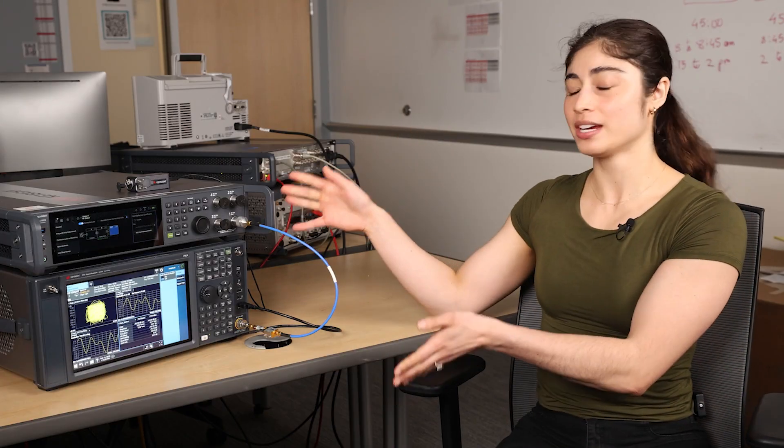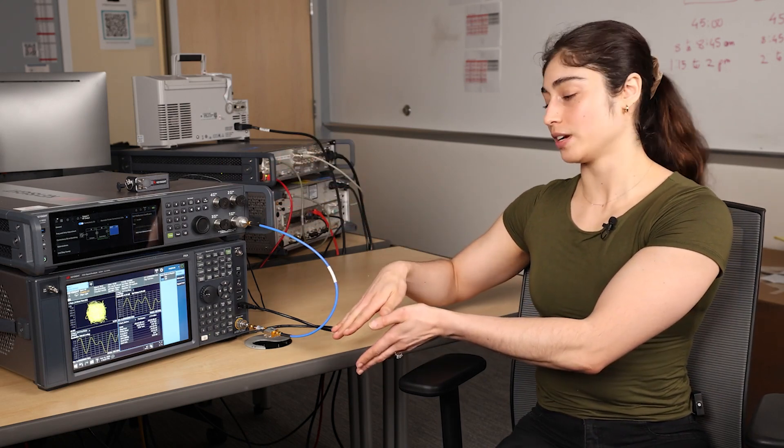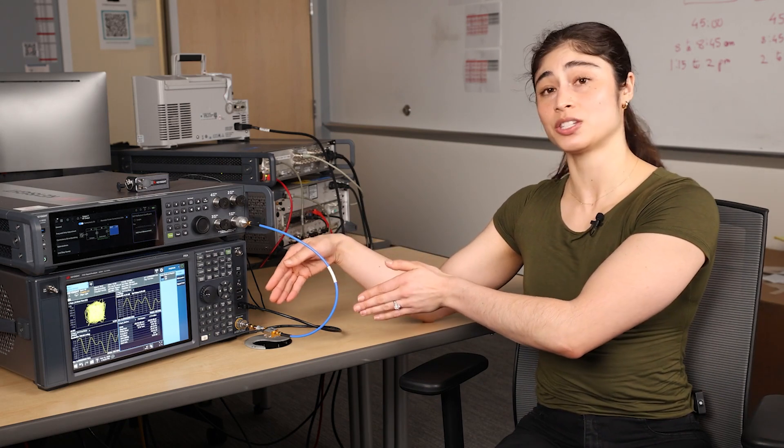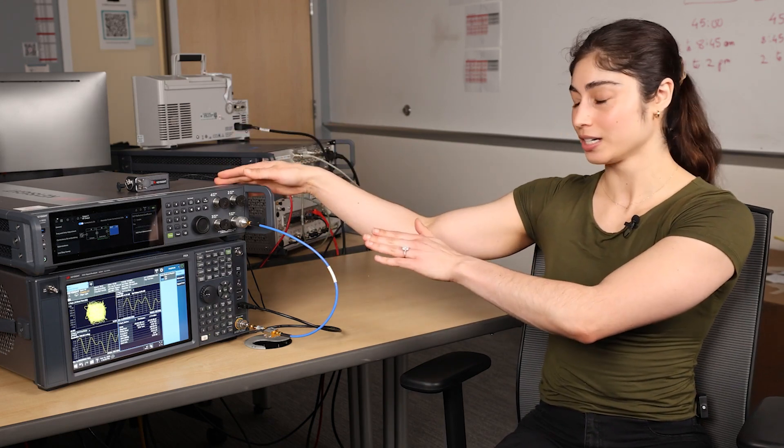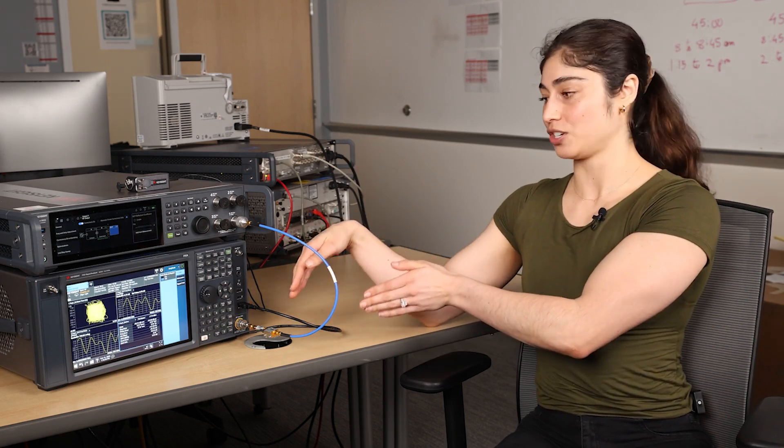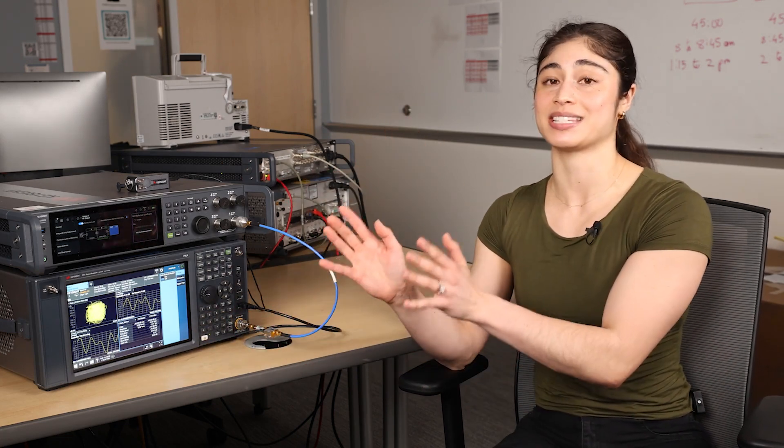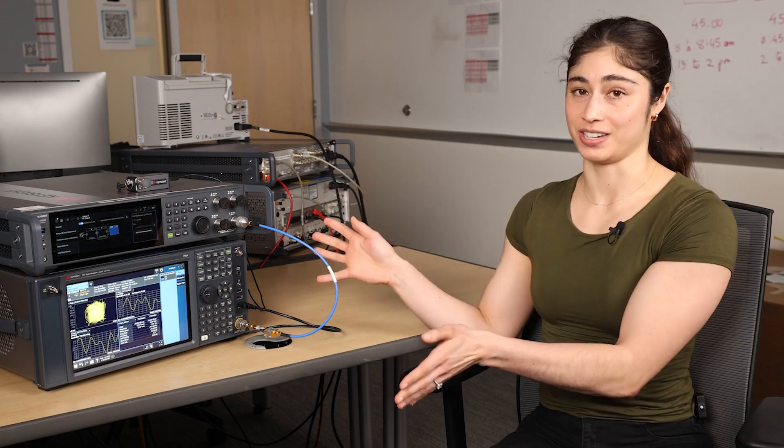So what we saw here today with the embedded reflectometer was that we characterize our fixture and move the reference plane closer to the input of my DUT, so I could understand more about my DUT's performance and not the performance of my signal generator. We also saw what happens when I characterize the match of my DUT and remove those mismatch error terms and how it improved my unequalized EVM by 7 dB. And this was all very fast, simple, and convenient.